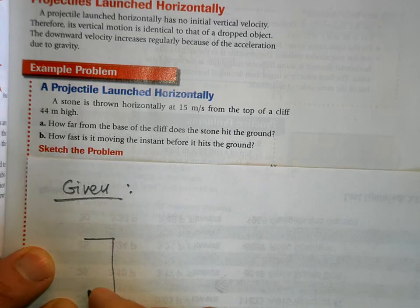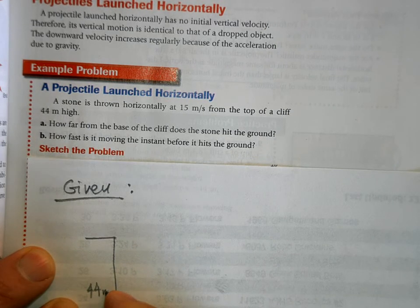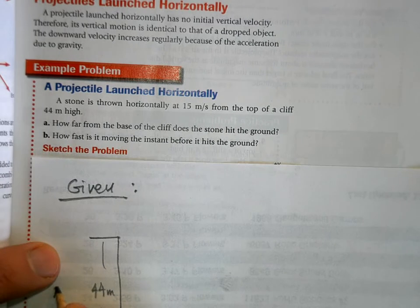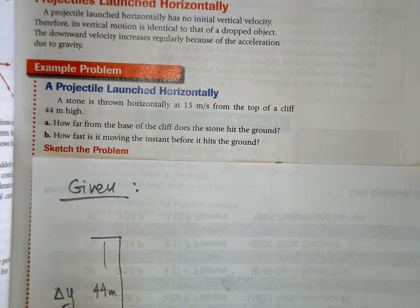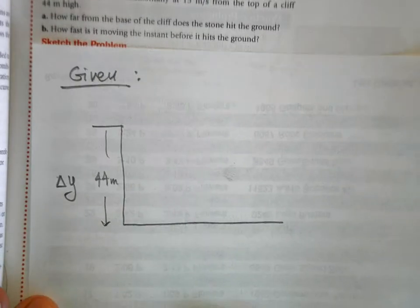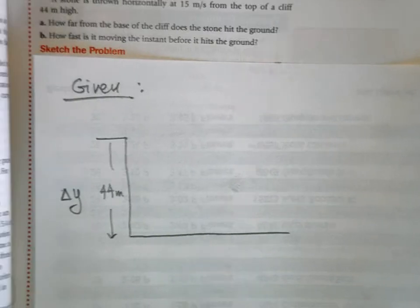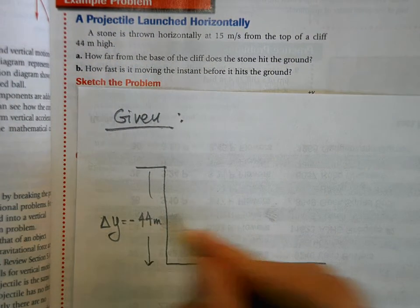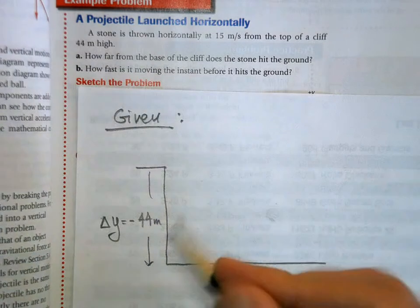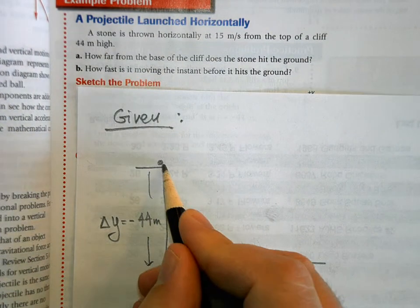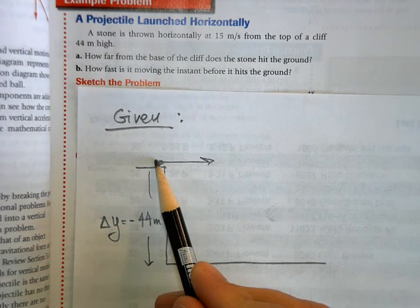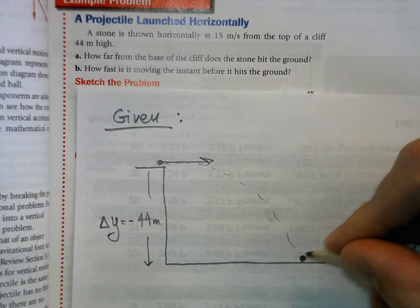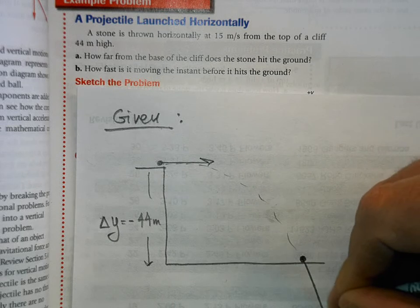Here's how to approach these problems: first, write down what's given and draw a picture. We have a cliff, and Delta Y is negative 44 meters — the stone is going to fall down. Here's the stone with its initial velocity, and here's the stone just before it hits the ground.